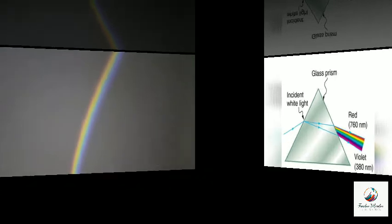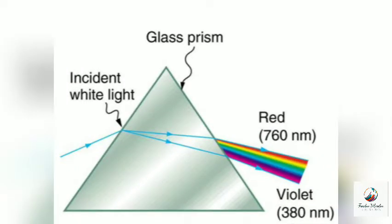This happens through a process called refraction through a prism. The red light appears on the top and the violet light appears on the bottom, based on the wavelength.